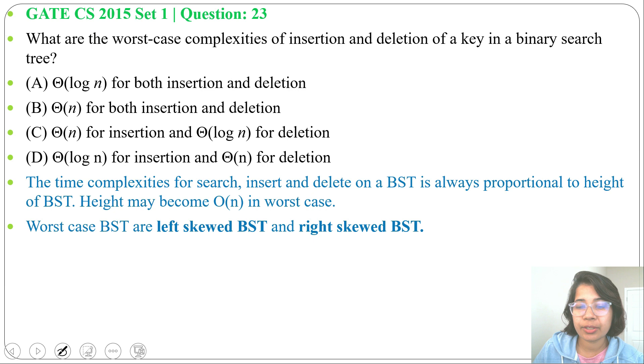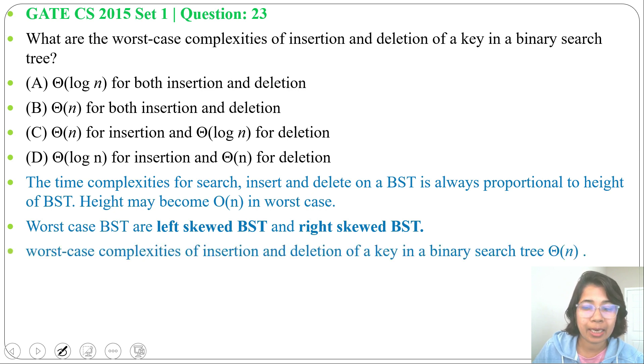It can be either left skewed BST or right skewed BST. That's why worst case complexity of insertion and deletion of a key in a binary search tree can be theta of n. Answer is option B.